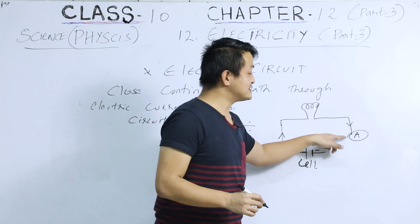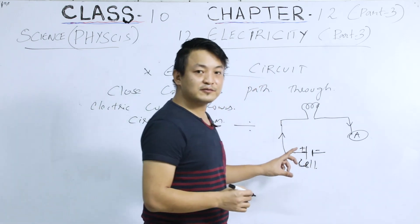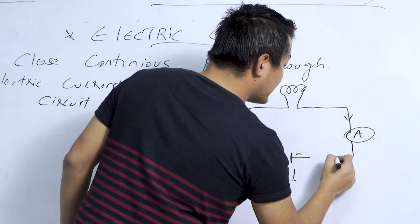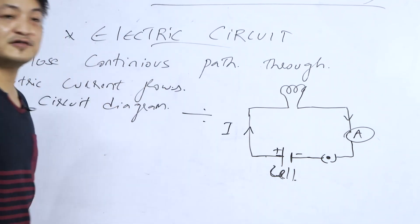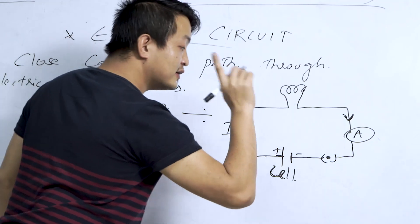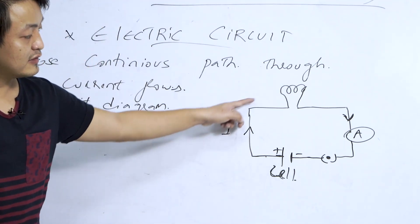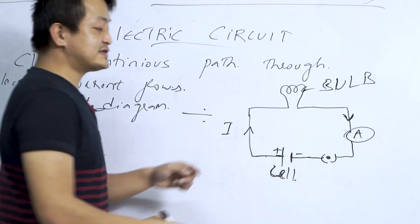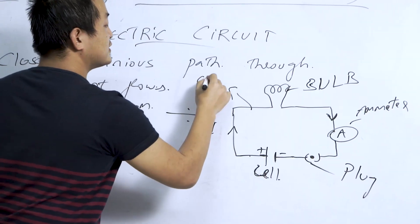We discussed the ammeter in the last class — it is a device for measuring electric current. I'm showing you a simple circuit diagram connected in series. We also have a switch here. The current flows from the positive end, and as soon as we switch on the plug, the bulb will glow.